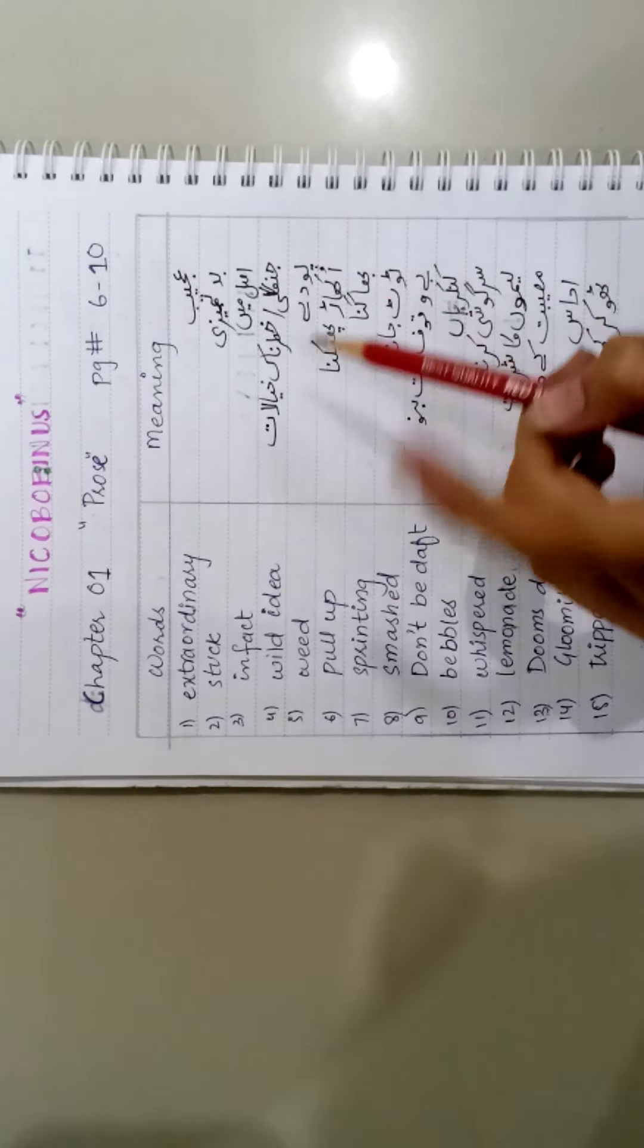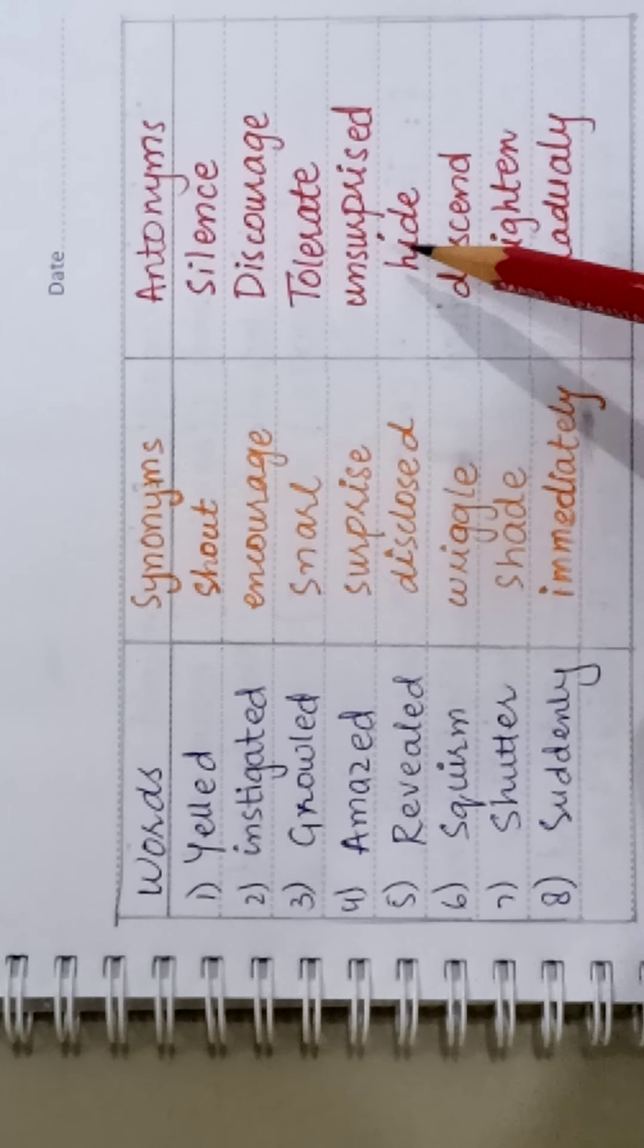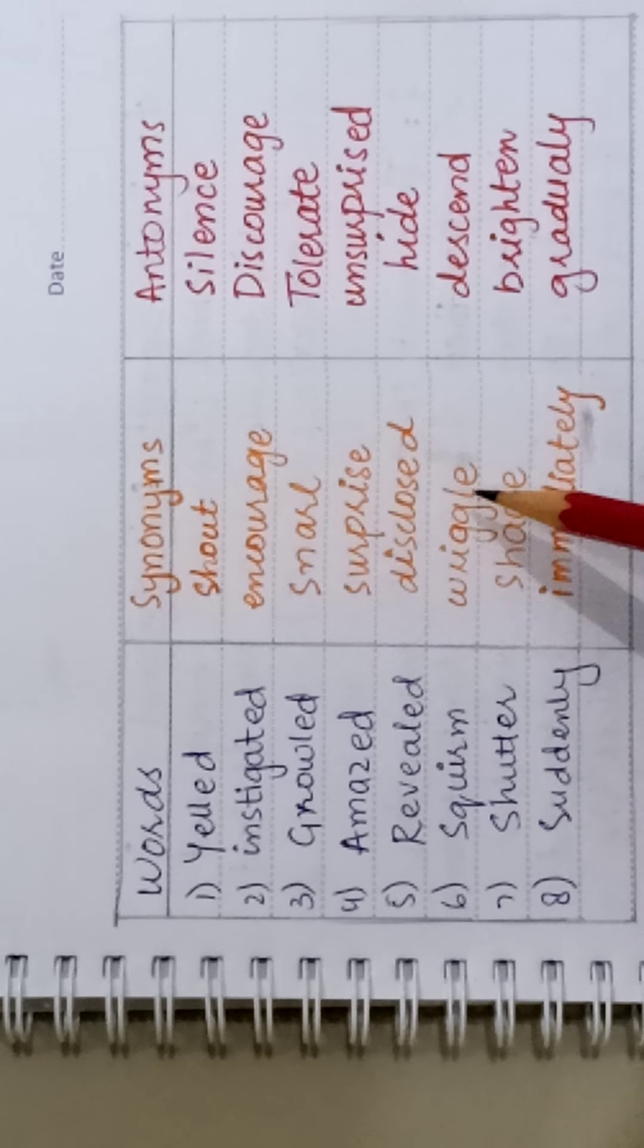Now let's go to words and synonyms antonyms. Yelled: shout, silence. Instigated: encouraged, discouraged. Growled: snarled, tolerate.